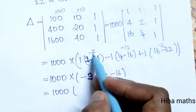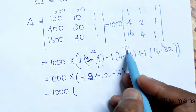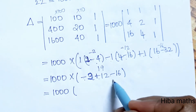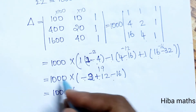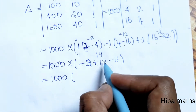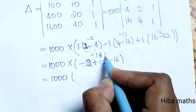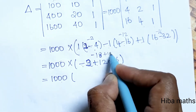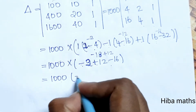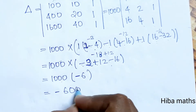Now we multiply: minus 2 into 1 is minus 2, minus 12 into minus 1 is plus 12, minus 16 into plus 1 is minus 16. So we get minus 2 plus 12 minus 16 which gives minus 6. Therefore the determinant is 1000 into minus 6, equal to minus 6000.